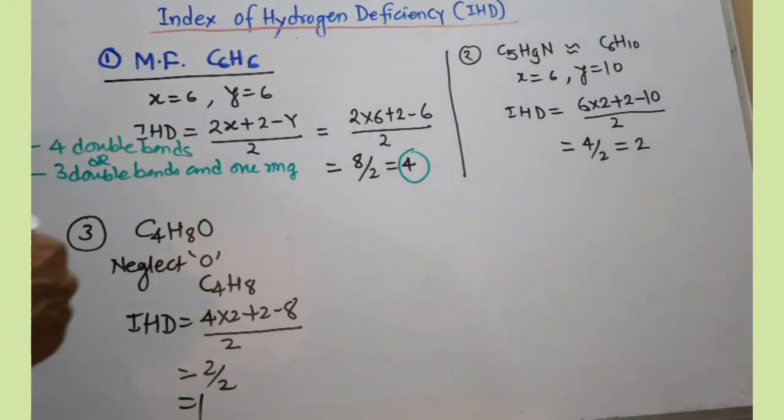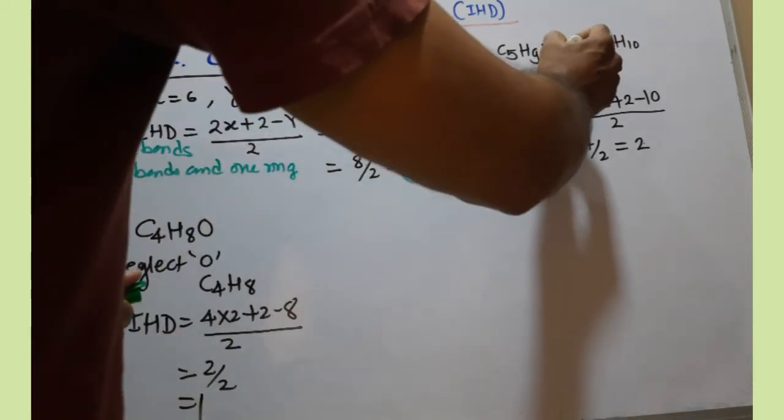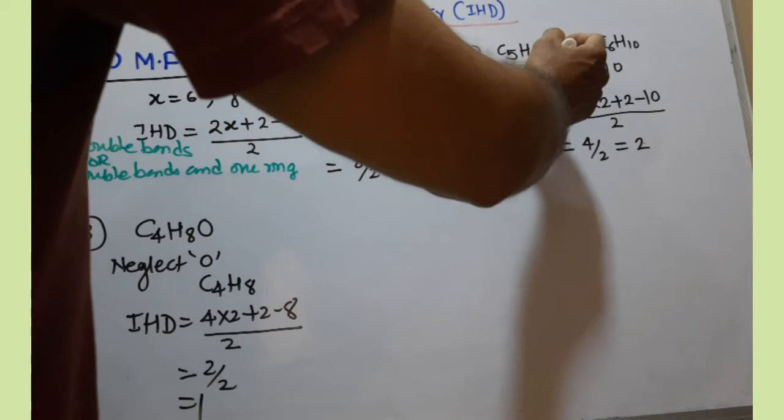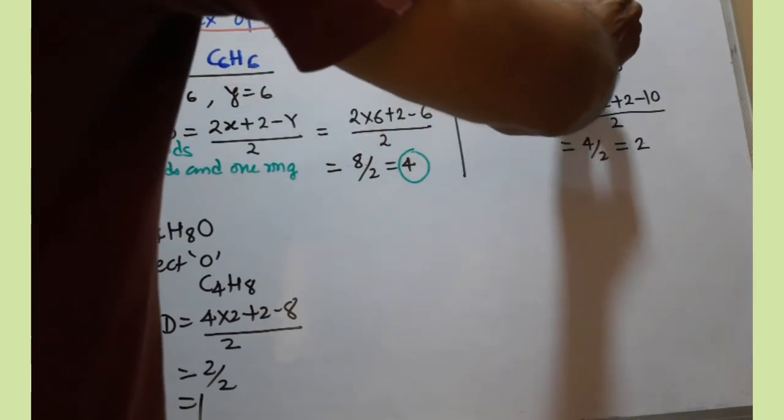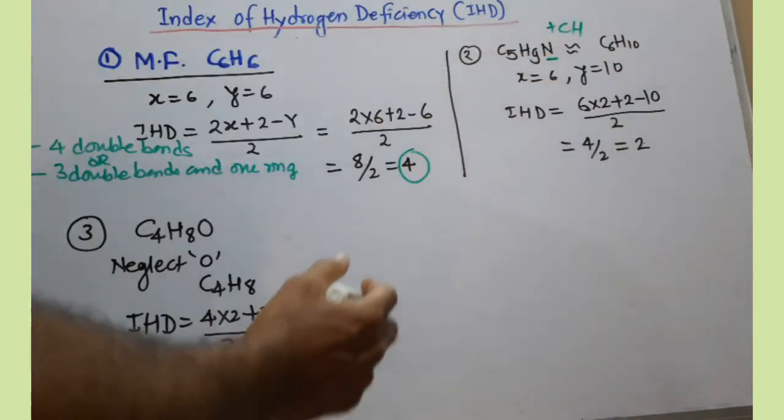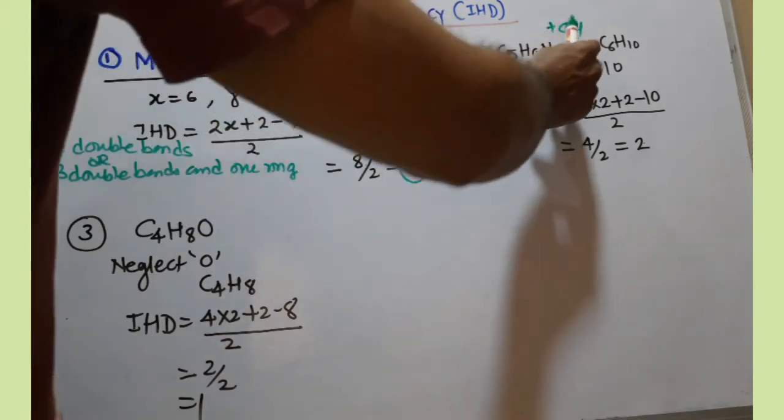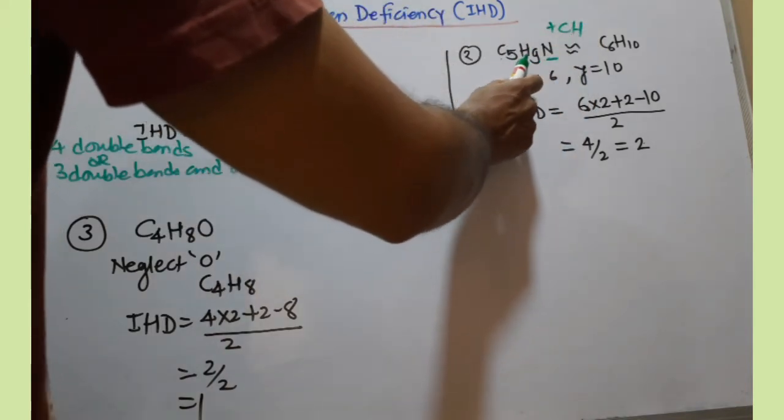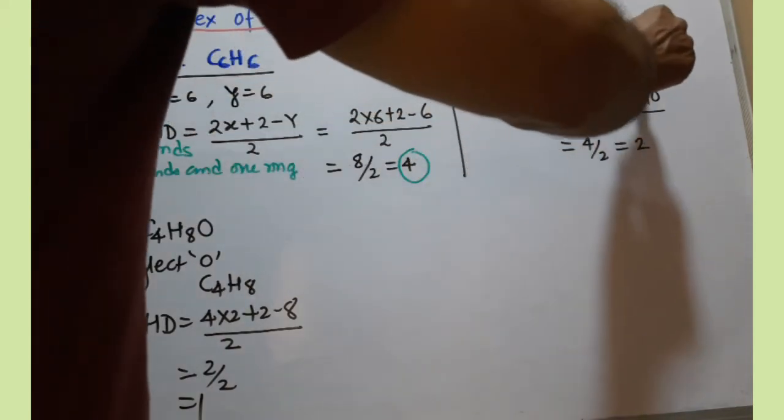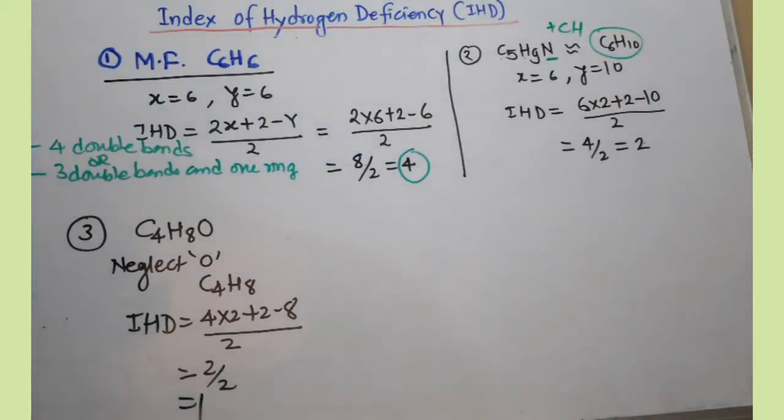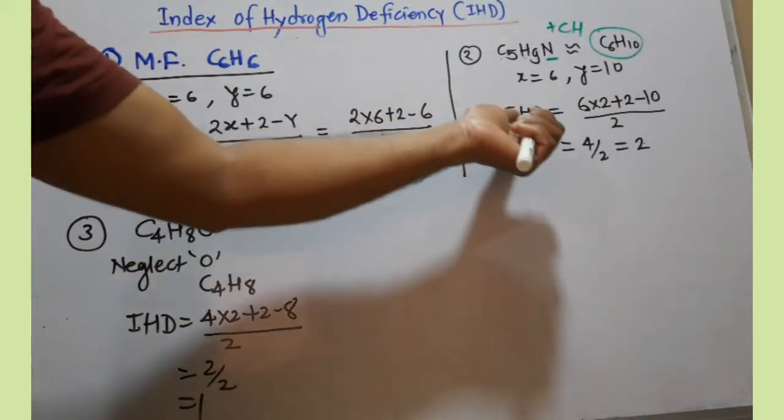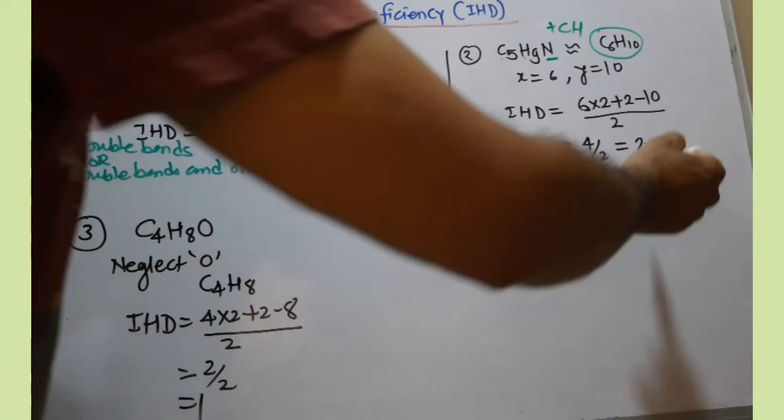I am moving toward the next example where nitrogen is present. If nitrogen is present, as I mentioned, you have to add CH. Remove that nitrogen. If I add CH, one carbon is added here, hydrogen is added here. So it is converted to C6H10. By putting these values in the formula, we get the value two.